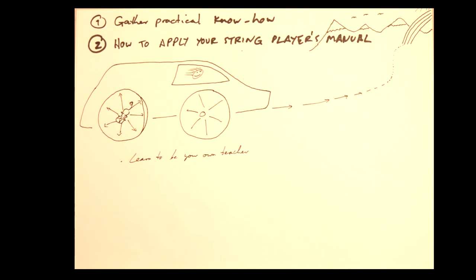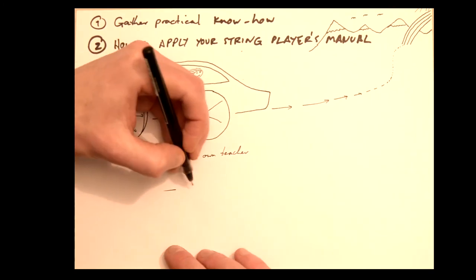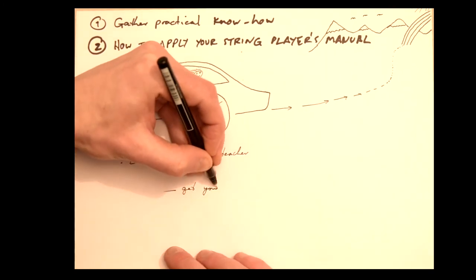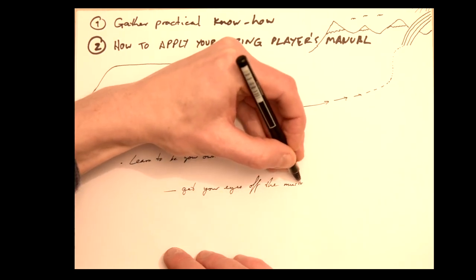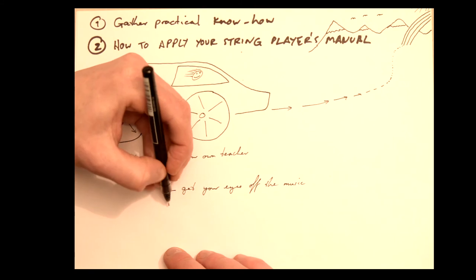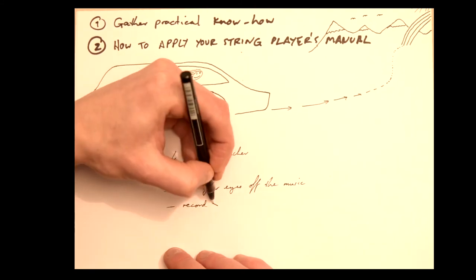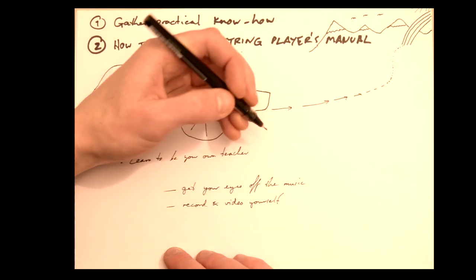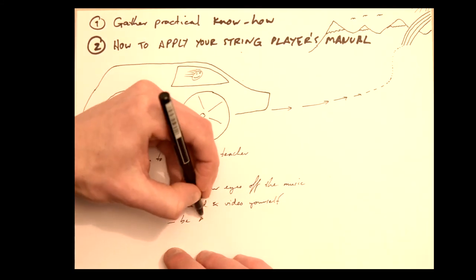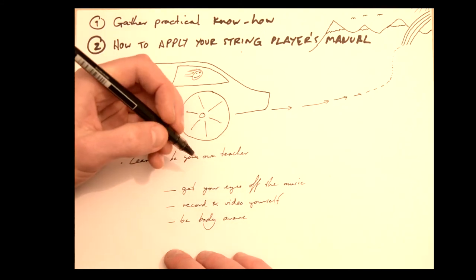To finish with, a few tips of how to get good at it. Get your eyes off the music and focus instead on your hands and your ears. You can record and video yourself and learn from watching and listening to playback. Learn to be body aware. Good technique requires developing a certain feeling in your hands as much as controlling how they look and visibly move.